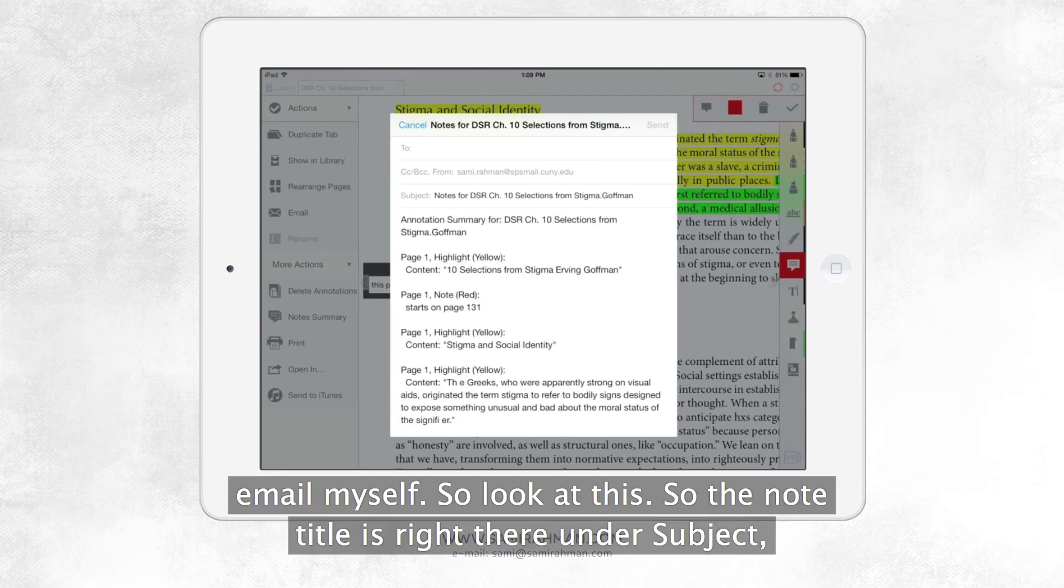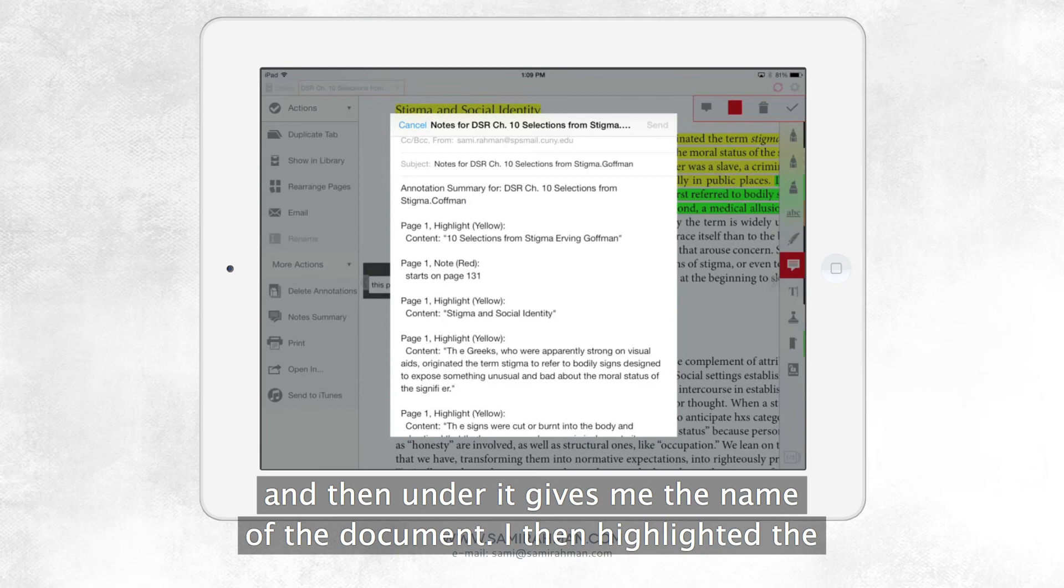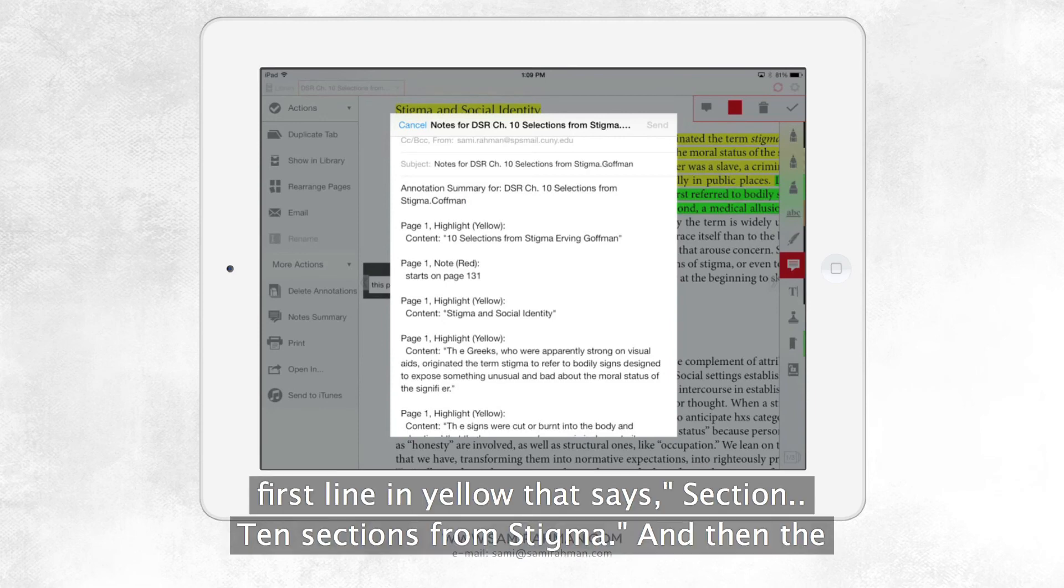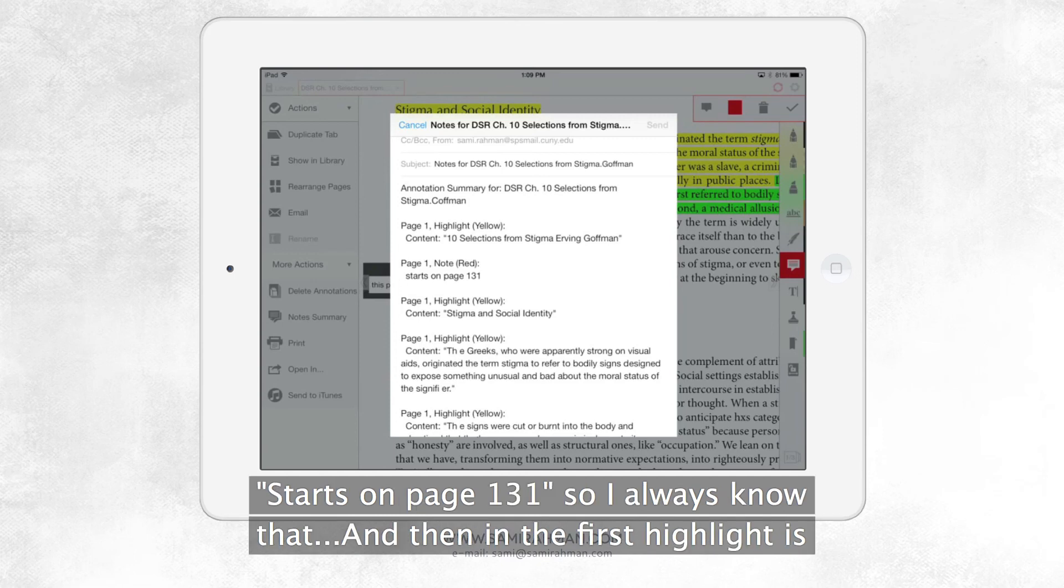So look at this. So the note title is right there, under subject. And then it gives me the name of the document. It then, I highlighted the first highlight, and yellow says section, 10 sections from stigma, and then the author's name. And then there's my note. It says a note, and it's in red, and it says starts on page 131.